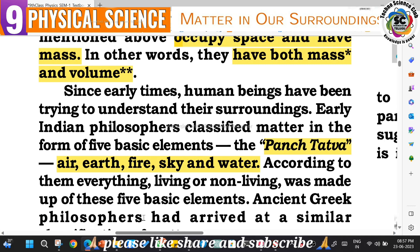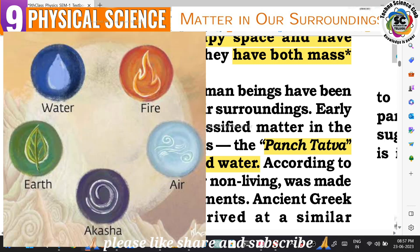According to Indian philosophers, matter is classified into five basic elements called Panchatatwa. These five basic elements are: air, earth, fire, sky, and water - known in Telugu as bhoomi, niru, akasamu, gali, and agni.